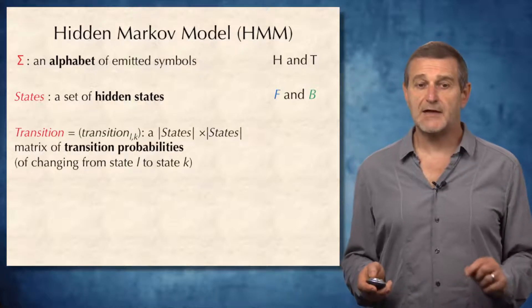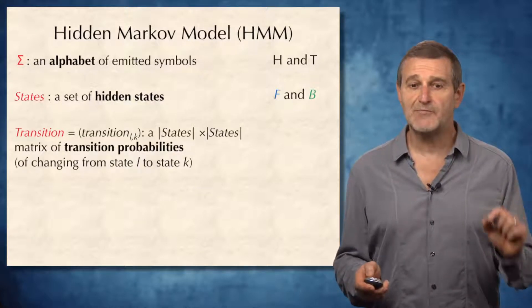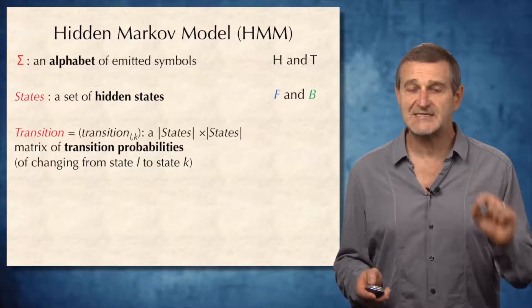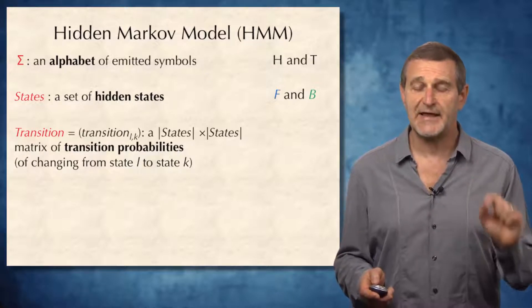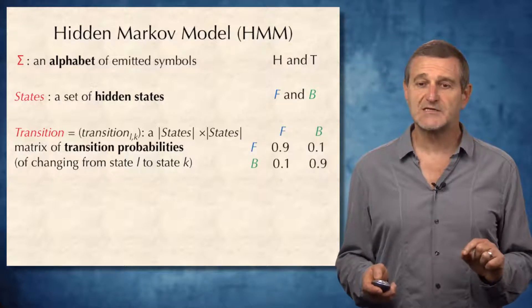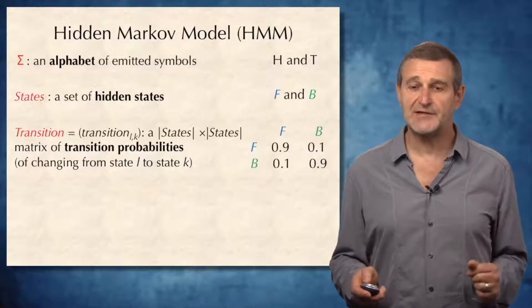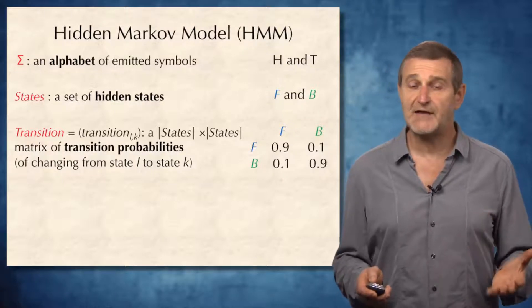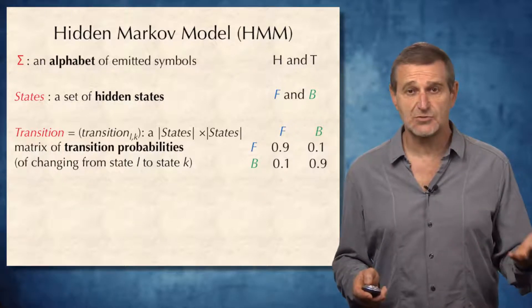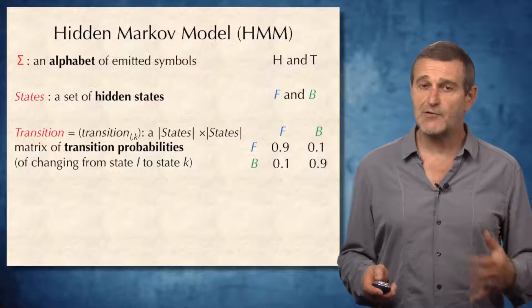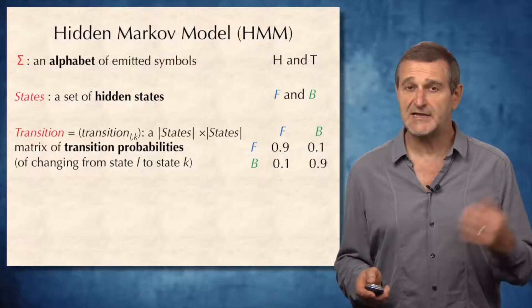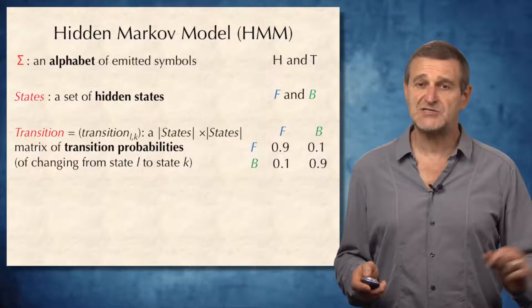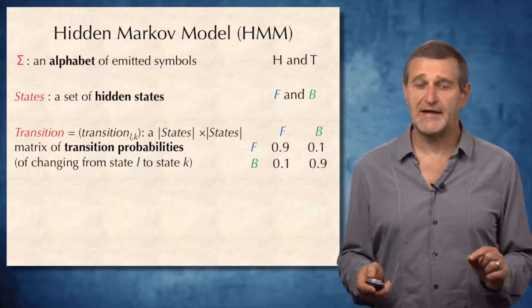Next, a matrix of transition probabilities, which describes the probability of moving from state L to state K. In our crook-casino example, the probability of moving from state F to state F is 0.9, but the probability of moving from state F to state B is 0.1, because the probability of switching coins is 0.1.